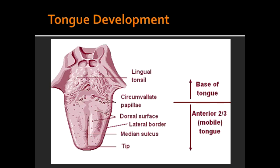What are all the cranial nerves responsible for pain sensation of the tongue? The cranial nerves responsible for pain sensation include cranial nerve V3, which is the mandibular nerve, as well as cranial nerve 9, the glossopharyngeal nerve, and cranial nerve 10, the vagus nerve.